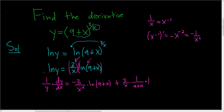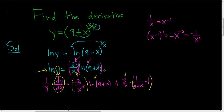Let's go over that derivative one more time. When you take the derivative of the left-hand side, it's 1 over y times the derivative of the inside. The inside function is y, and the derivative of y is called dy/dx — that's the chain rule. On the right we use the product rule: derivative of the first times the second, plus the first times the derivative of the natural log of 9 plus x, which is 1 over 9 plus x times the derivative of the inside.